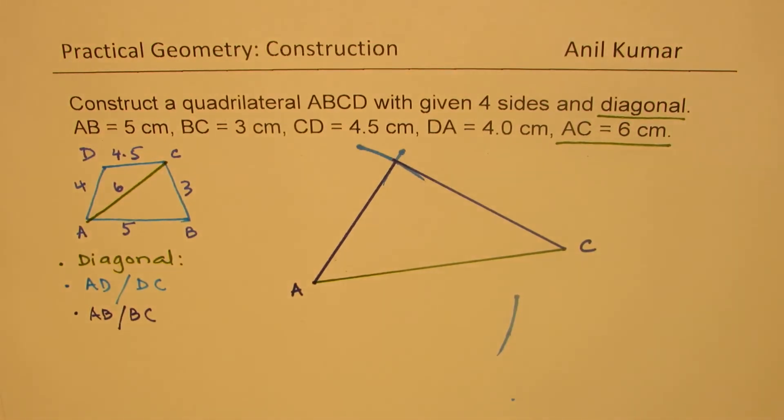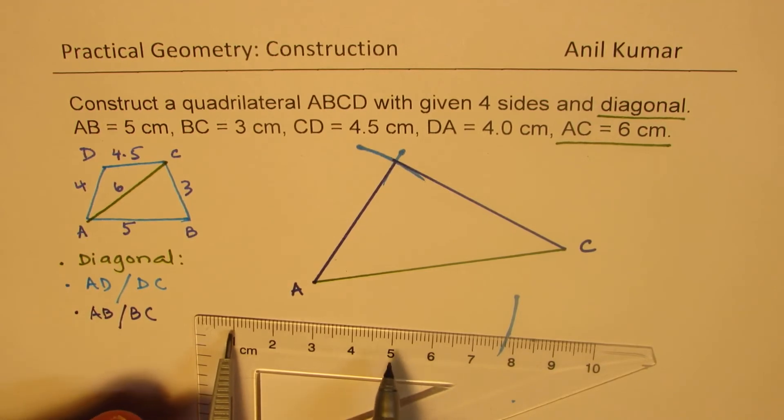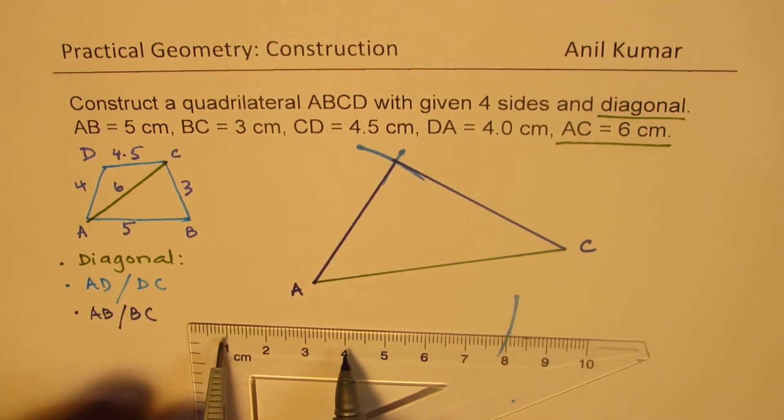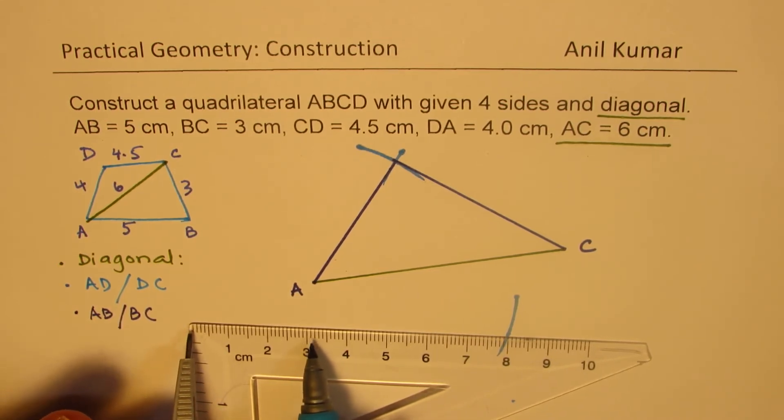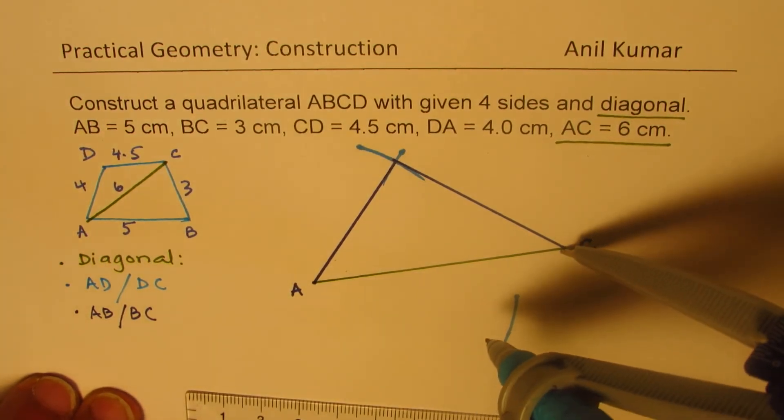And now 3 centimeters is B to C, so let's go 3 centimeters, that is from 1 to 4. You should actually do it from 0 to 3. So then place your compass at C and mark 3 centimeters.